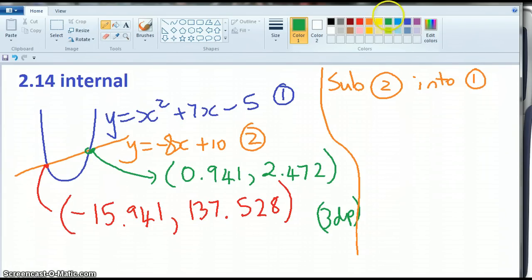And what do I get, where, if I'm subbing 2 into 1, where y was I'm going to write that. So I've got negative 8x plus 10 equals x squared plus 7x minus 5.